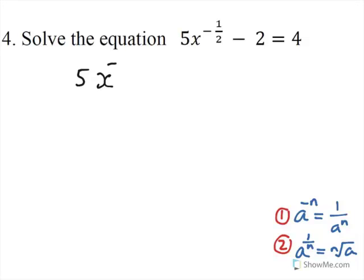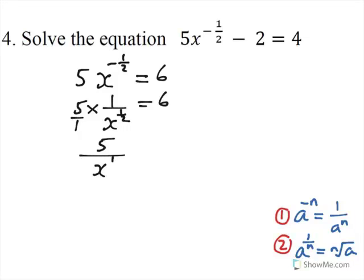So the first thing to do then is to add 2 to both sides. So we end up with 5x to the power of negative 1 half equals 6. And then we need to think of this as 5 times 1 over x to the power of 1 half, using rule number 1 on the bottom right-hand corner, and that equals to 6. And of course this 5 is 5 over 1, 5 times 1 is 5, 1 times x to the power of 1 half is x to the power of 1 half, and that equals to 6.